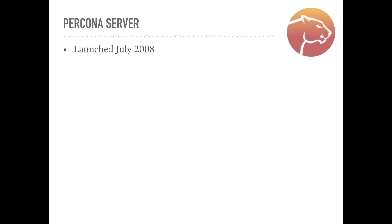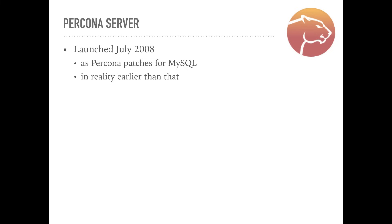Percona server was originally launched around July 2008, when we started releasing our builds of MySQL 5.0 and 5.1 with a few additional patches — microsecond resolution slow query log, execution plan details, additional InnoDB statistics, and a user statistics patch from Google. Although it wasn't called Percona server back then yet — it was called simply Percona patches for MySQL. Unofficially, however, Percona had been building patched versions of MySQL for their customers even earlier.